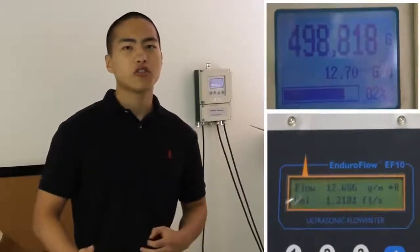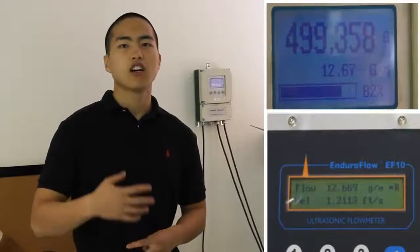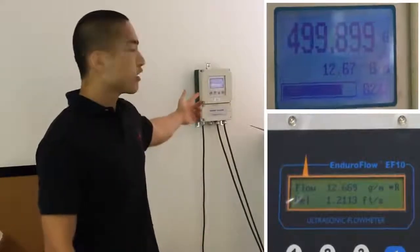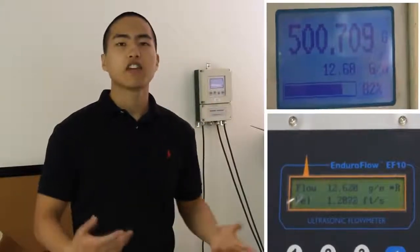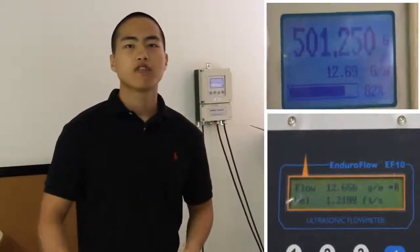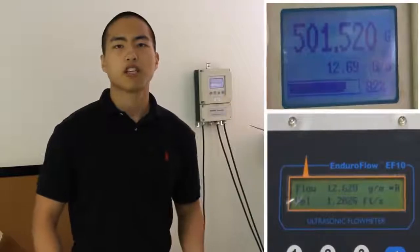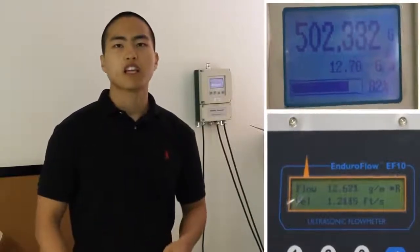Now we're going to have the shot showing you the comparison between the flow rate on our flow meter and the flow rate shown on the standard mag meter. And as you can see, the difference is always within 1%. So our flow meter is extremely accurate.